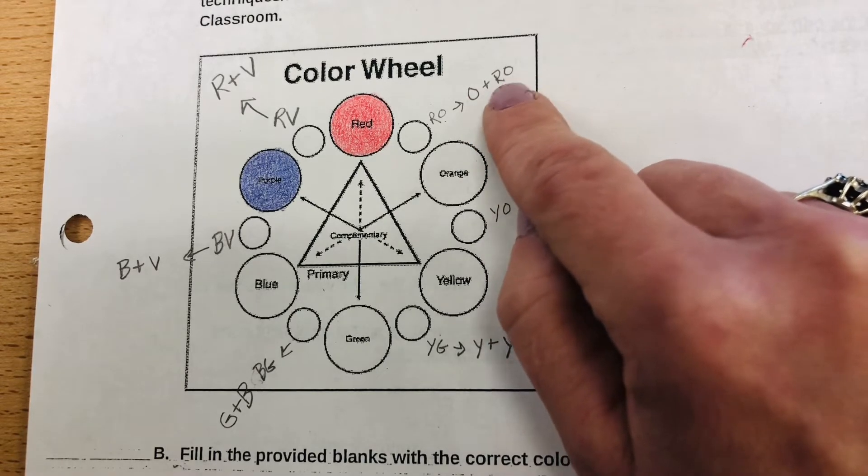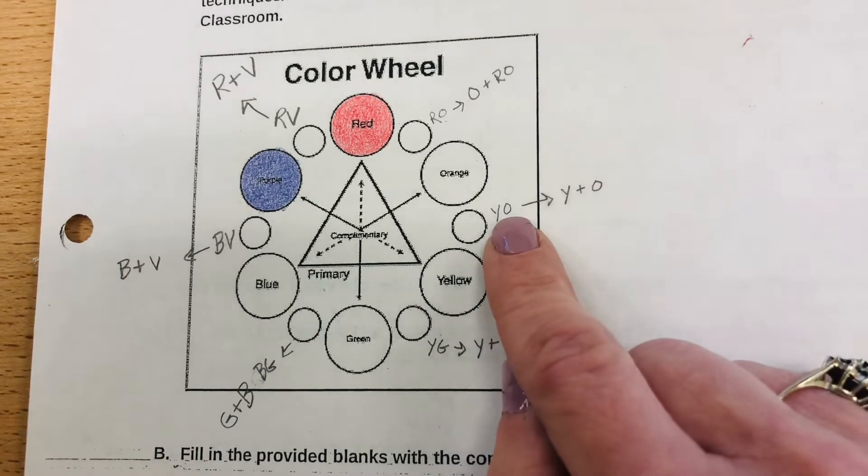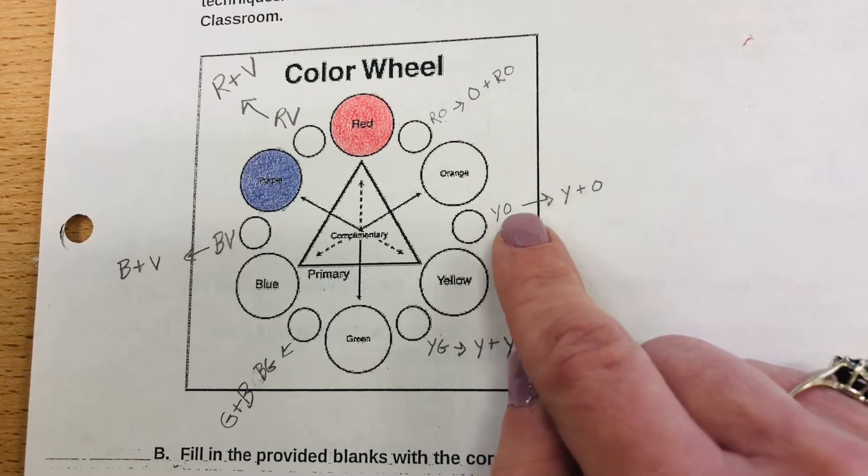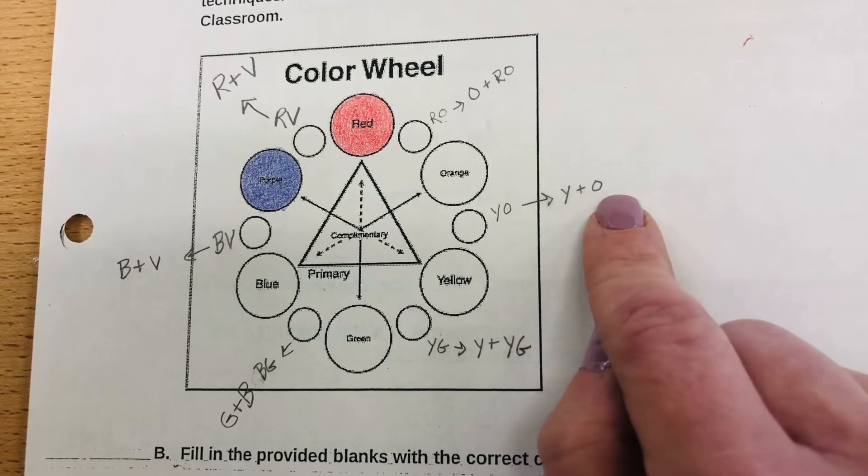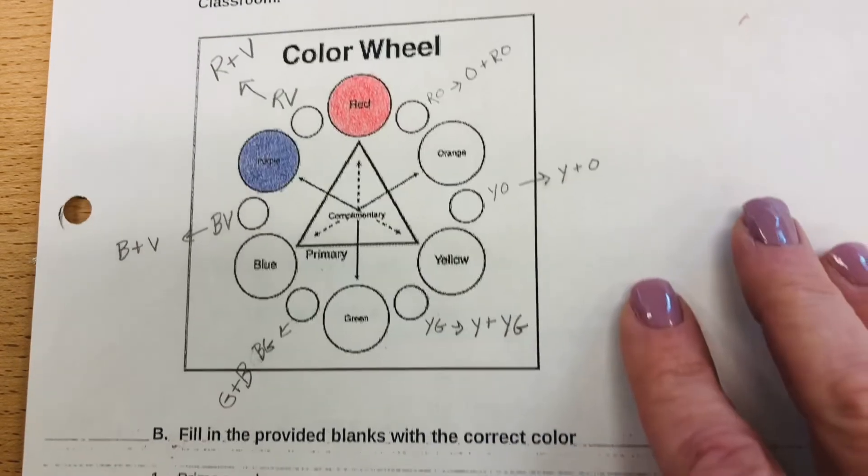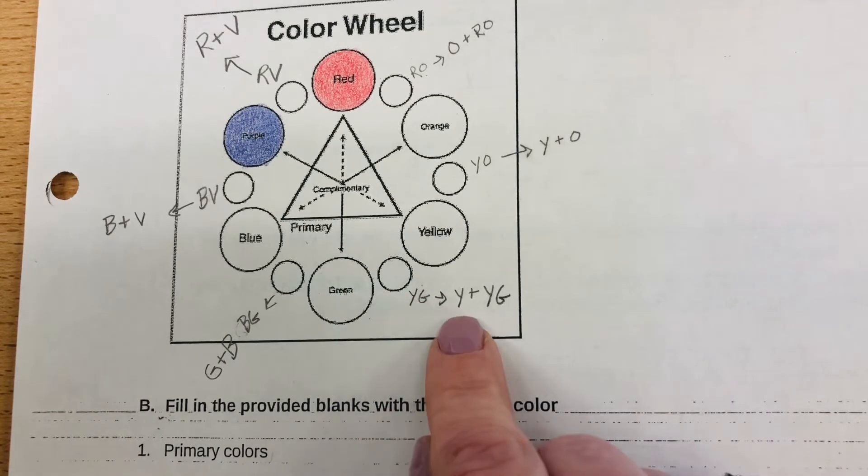The next one is going to be yellow-orange. You'll end up putting the yellow first because it's the lightest color, and then just the orange second. For yellow-green, you'll end up putting yellow first, the lightest color, and then the yellow-green that is in your pack second.